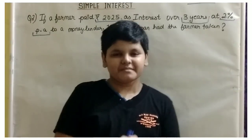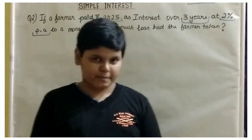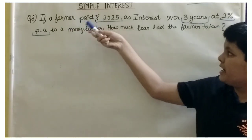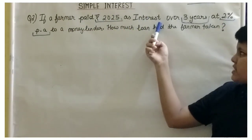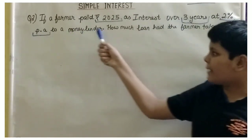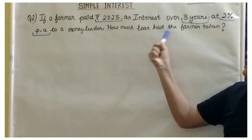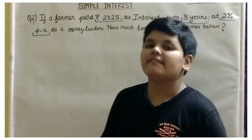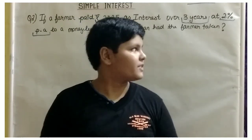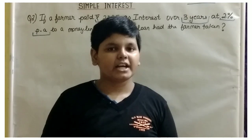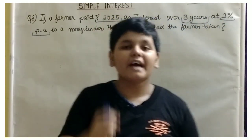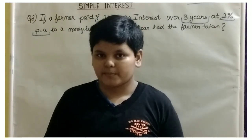Let us take one more question to figure out whether we can solve it. We are here with another word problem: if a farmer paid Rs. 2,025 as interest over 3 years at 2% per annum to a money lender, how much loan had the farmer taken? Here we are given the time period — 3 years — the rate of interest — 2% — and the simple interest — 2,025. We have to find out the principal value.